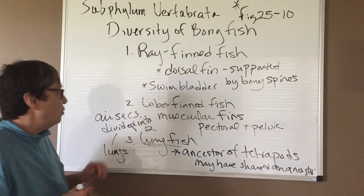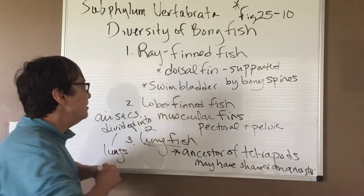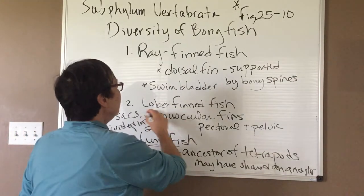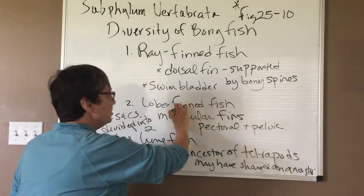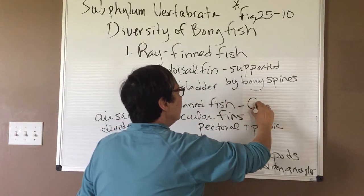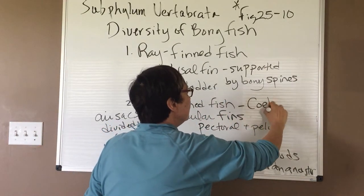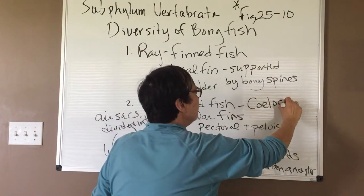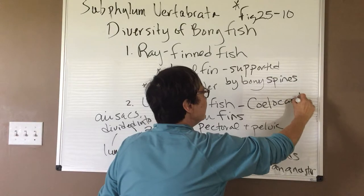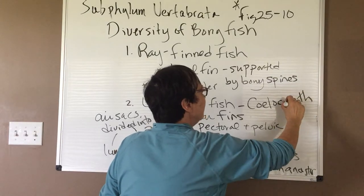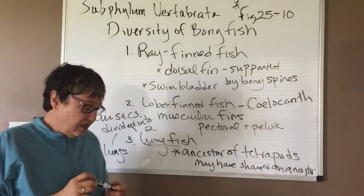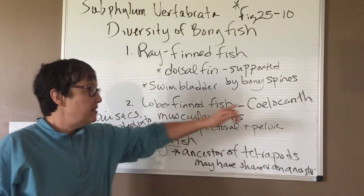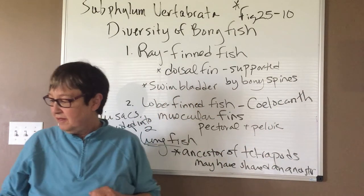One thing I forgot to mention: in the lobe-finned fish, these are mostly extinct. But there is one living species that you might have heard of — that's the coelacanth.